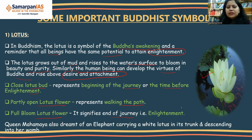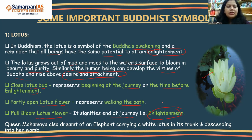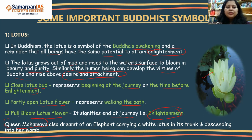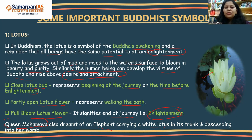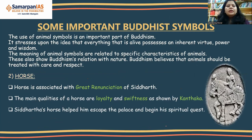There is an important story in Buddhism: Lord Buddha's mother, Queen Maha Maya, dreamt of an elephant carrying a white lotus in its trunk and descending into her womb before Siddhartha was born. So both the lotus and the elephant are important symbols in Buddhism.